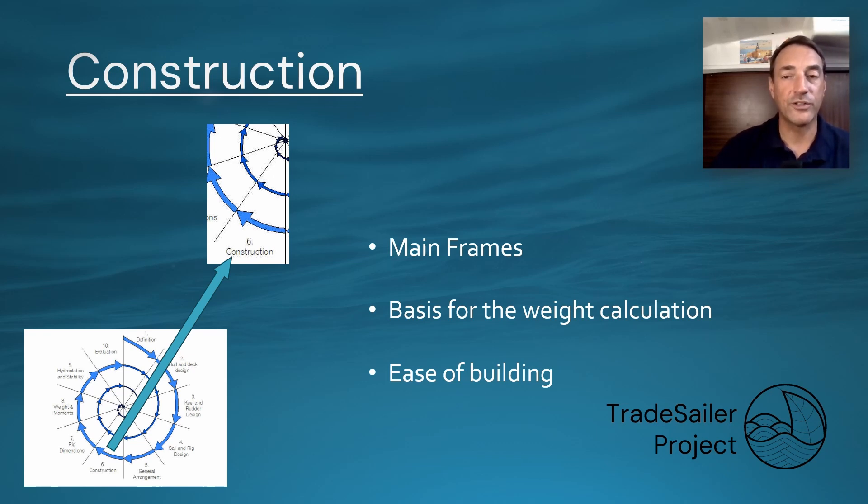One is the cargo hold itself, where we've got a double bottom and a double side. And then we've got the area forward of the cargo hold, which is basically a single side with a bit of double bottom and a bit with single bottom.